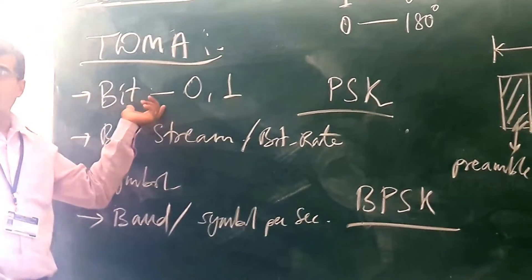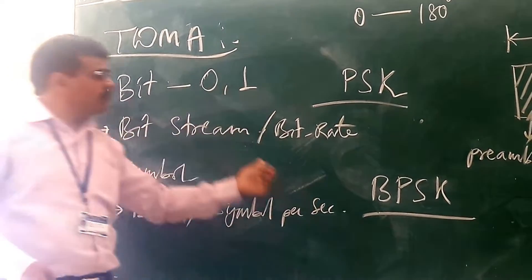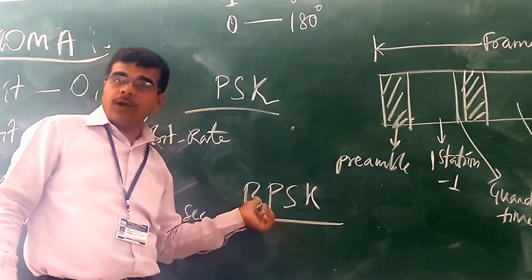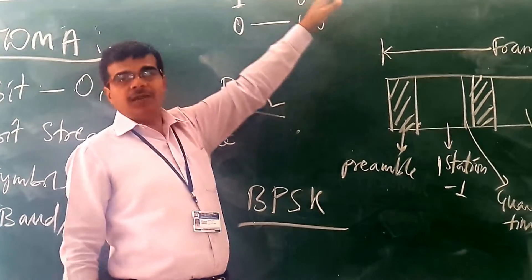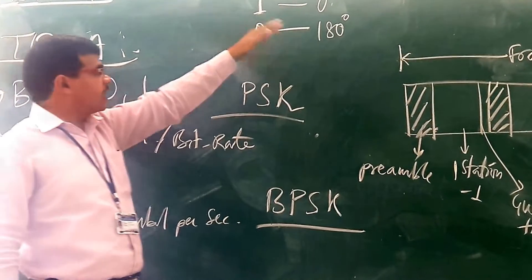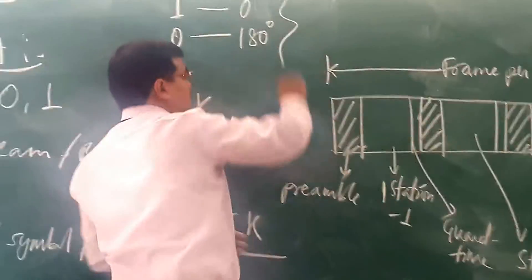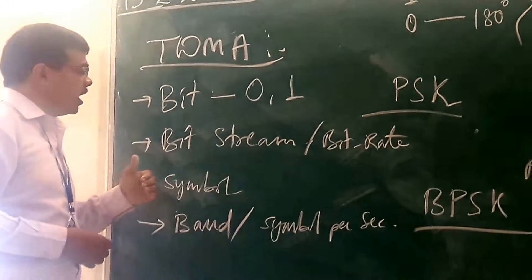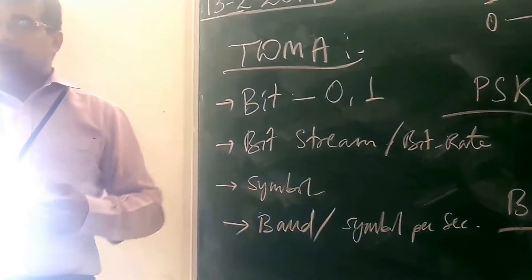Whatever the information is — in terms of 0s and 1s — if we are using binary phase shift keying for modulation, then for 1 bit, we will keep it in phase, and whenever you are having a 0, we can give it as 180 degrees out of phase. I have put this just as an example. So in case of binary phase shift keying, we are just considering 1 bit.